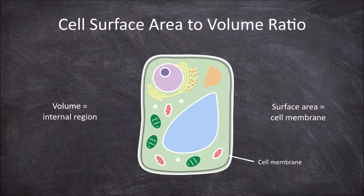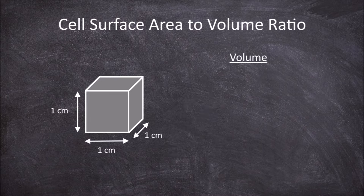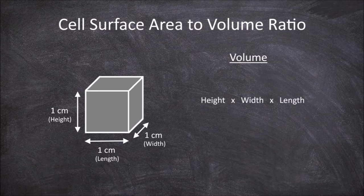Surface area, volume, and the surface area to volume ratio can be easily calculated using a cube as a model. Let's look at a cube with a side length of 1cm. The volume of this cube is all the 3-dimensional space the cube takes up. To work out the volume of a cube you multiply the height by the width by the length. So for this cube it would be 1cm × 1cm × 1cm, which equals 1cm³.